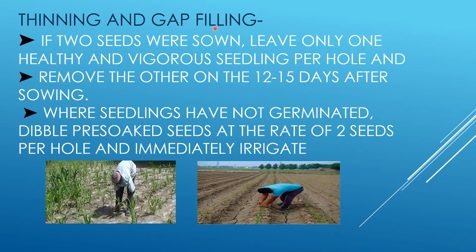For thinning and gap filling: after transplanting one or two seeds, by 12 to 15 days two plants may establish at one place. Select the healthy and vigorous plant and remove the others — this is thinning. For gap filling, where there is a gap between plants, establish a new plant to maintain proper distance. This is practiced mainly at 15 days of age and increases crop yield.